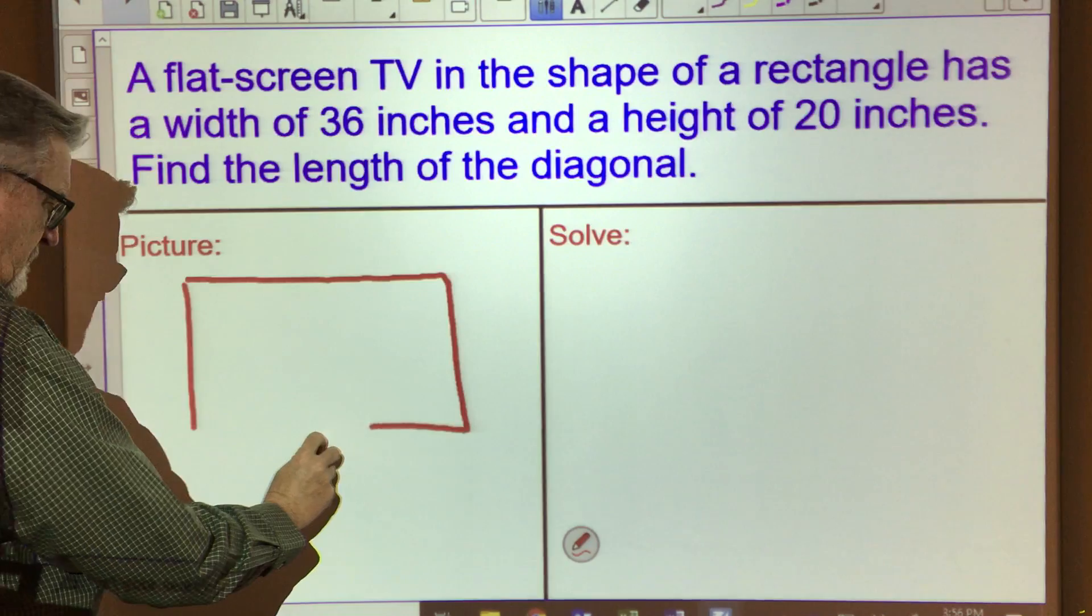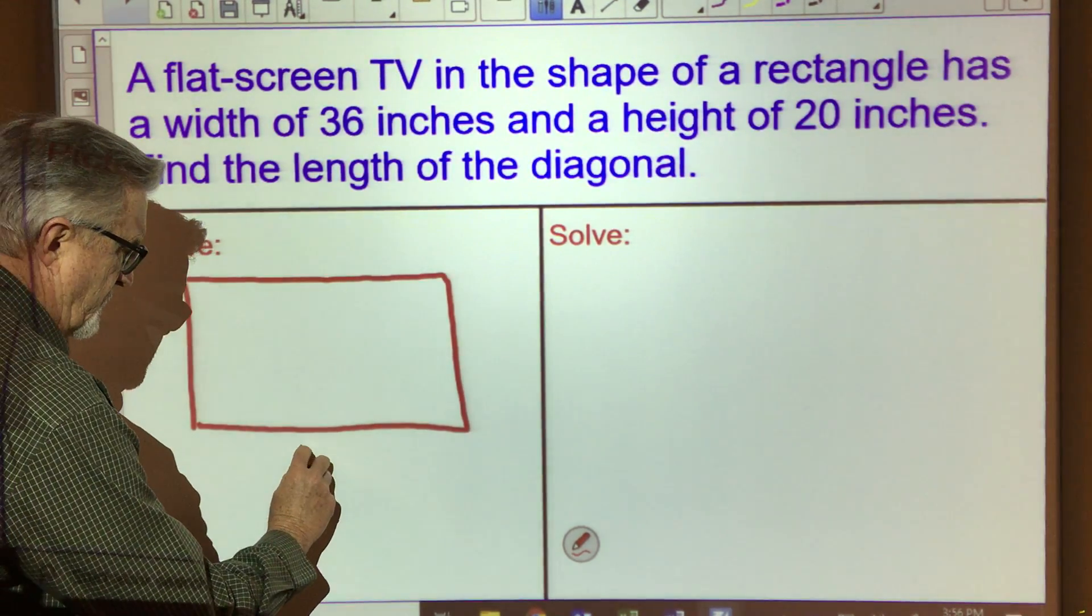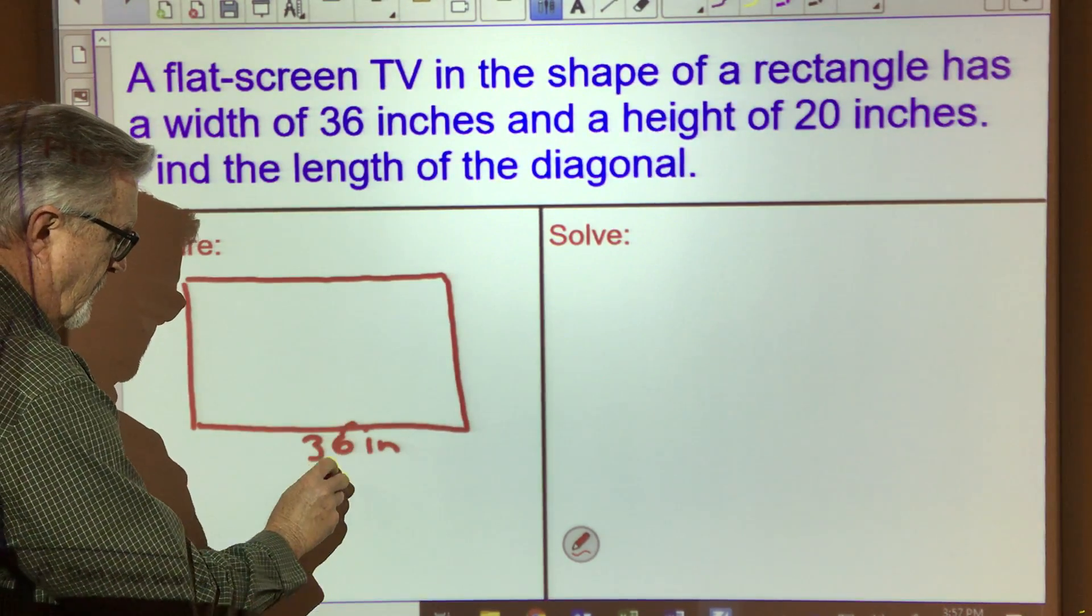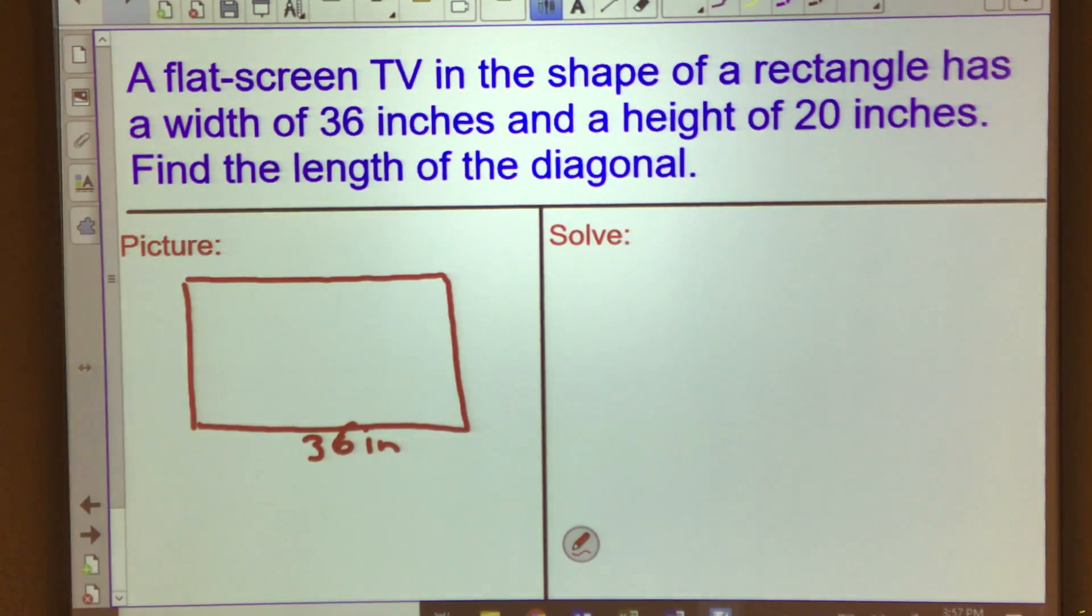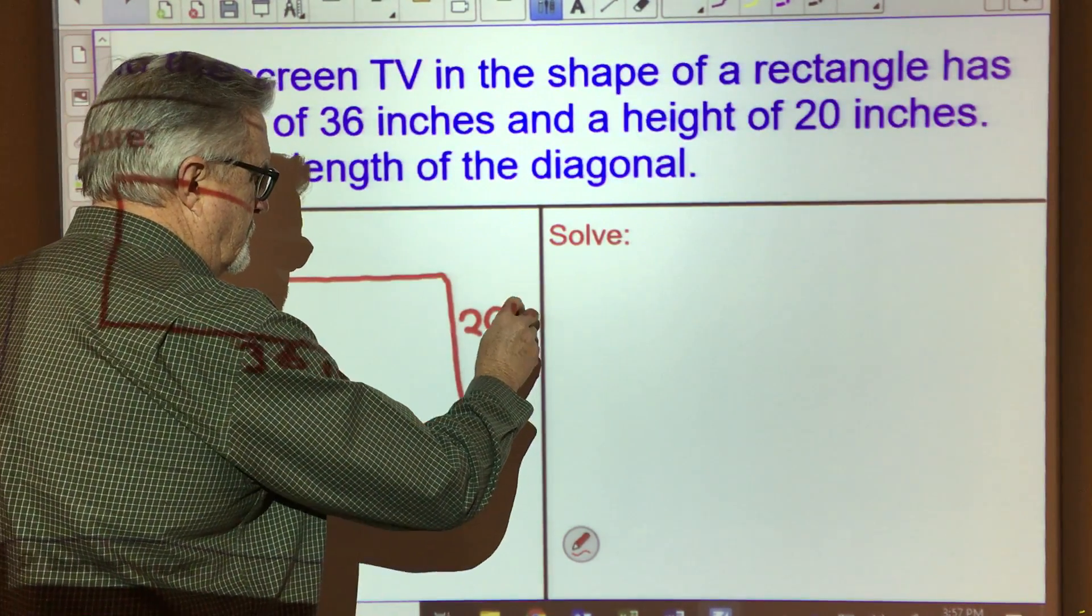So what I'm picturing, and if you just think about the TV, your TV at home, it's wider than it is tall, okay? And it said that the width was 36 inches, so we've got 36 inches here. And then it said that the height was 20 inches, so let's go ahead and say the height is 20 inches.